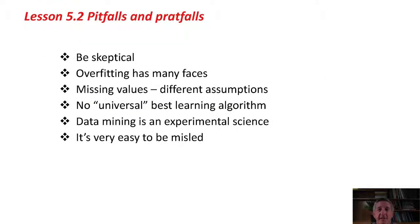Here's a summary. Be skeptical — when people tell you about data mining results and claim a certain accuracy, you want to test their classifier on your own fresh data that they've never seen before. Overfitting has many faces. Different learning schemes make different assumptions about missing values, which can really change the result. There is no universal best learning algorithm. Data mining is an experimental science, and it's very easy to be misled by people quoting results of data mining experiments. That's it for now — off you go and do the activity, and we'll see you in the next lesson.